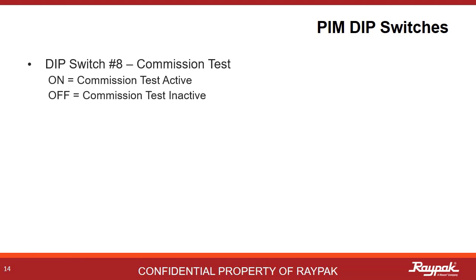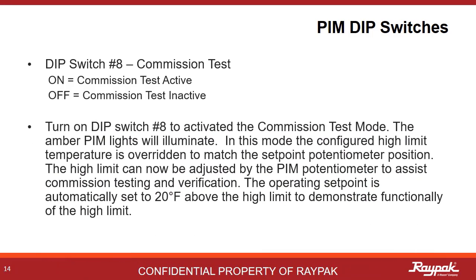PIM dip switch number eight controls the commission test. This is a handy tool for demonstrating that the high limit is working properly. With dip switch number eight on, the boiler will run to 20 degrees Fahrenheit higher than the high limit to force the high limit shutdown. Once complete, power off the boiler, turn off dip switch number eight, and turn the boiler on to clear the fault.